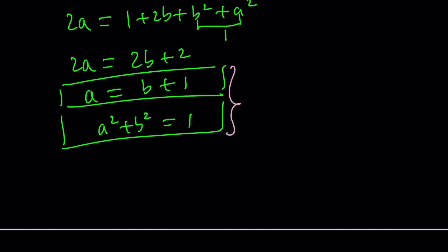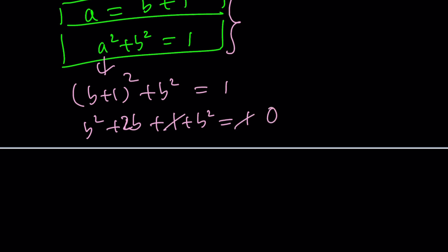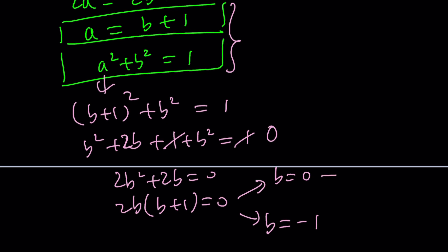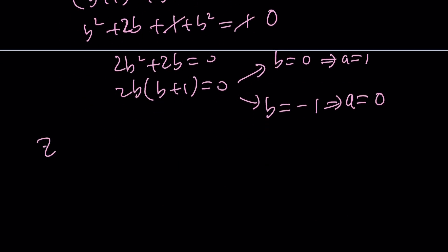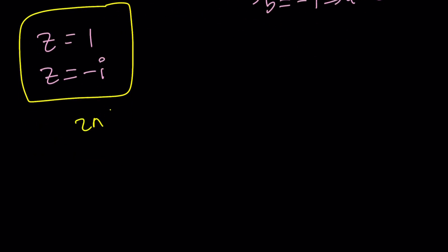Replace a with b plus 1. (b + 1) squared plus b squared equals 1. This is b squared plus 2b plus 1 plus b squared equals 1. The 1 cancels out. 2b squared plus 2b equals 0. Factor out 2b and you have b plus 1 equals 0. From here we get two options: b is 0 or b is negative 1. But remember a is 1 more than b. If b is 0, a is 1. If b is negative 1, a is 0. So z can be 1 or z equals negative i.